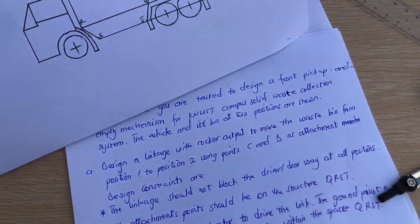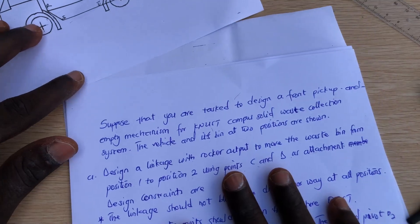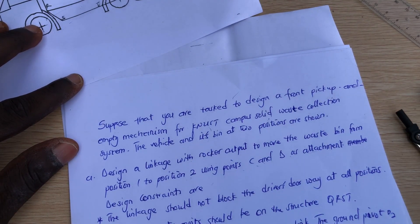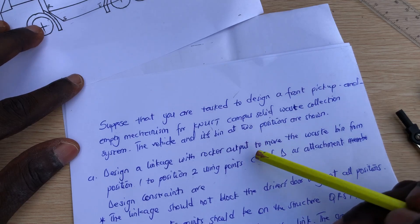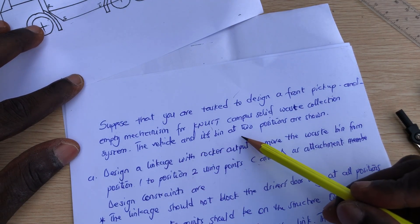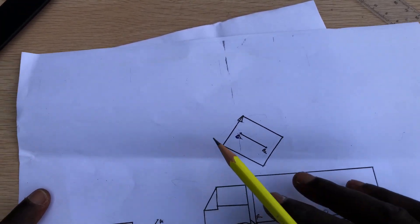So with this track problem, suppose that you are tasked to design a front pickup and empty mechanism for KNUST campus solid waste collection system. The vehicle and its bins are in two positions as shown - there's the vehicle and these are the bins.